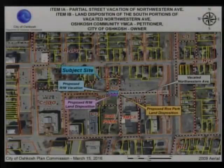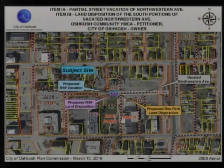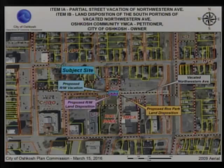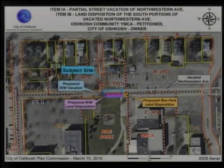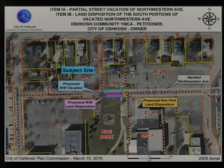Also, as part of this request — item 1B — the Y is requesting the city dispose of the south half of the proposed vacation to the YMCA, as well as a small 18-by-23-foot portion — shown in gold — of former Northwestern right-of-way that was vacated in 2000. When that was vacated in 2000, it went to the south property, which is Roe Park. It's still improved as a street with a sidewalk, but it's technically part of Roe Park.